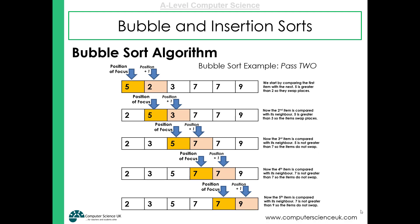The array is now sorted. However, the algorithm doesn't know that at this point, so there will be one final pass — pass three in this case. It will only be known to the algorithm that the data is in the correct order if it can pass through without having to do any swaps. That's what happens in the third pass. So there will always be one more pass after sorting — if it goes through with no swaps, it knows the array is sorted.